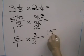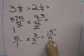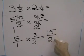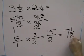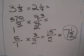5 times 3 is 15, 1 times 2 is 2, and 15 halves simplifies to 7 and 1 half. And that is your final answer.